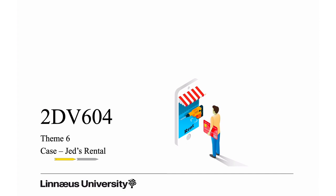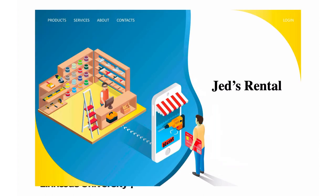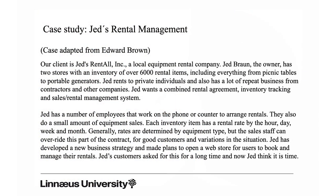In Theme 6, Architectural Reasoning, we look at the case study Jed's Rental, part of the 2DB604 course. As you remember, Jed has finally decided to put his business on the web and has asked a team of developers to come up with a solution. In this lecture we will focus on and exemplify various reasoning scenarios connected to the architecture or architecting procedure. The case is adopted from Edward Brown.